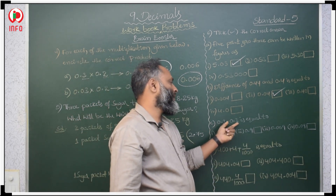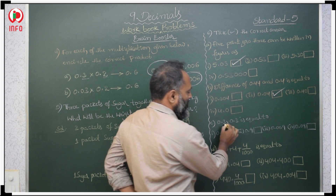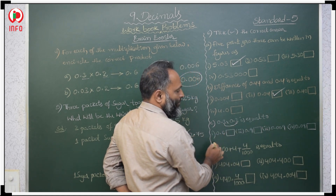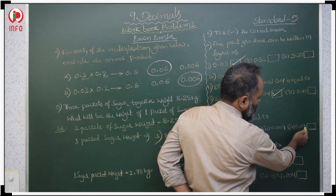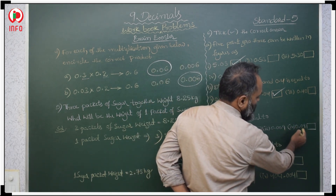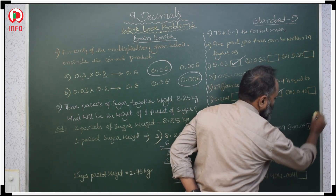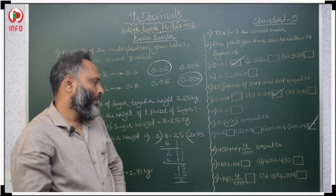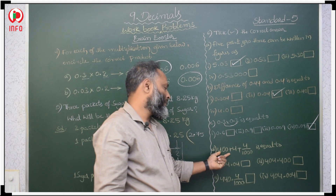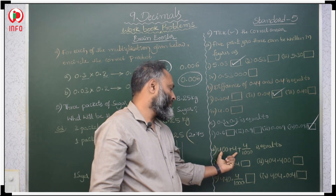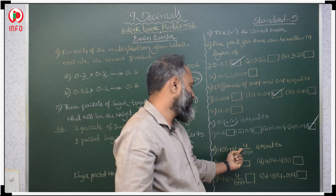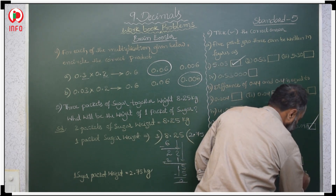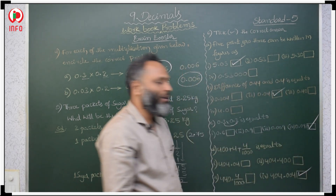0.3 times 0.3: multiply 3 times 3 is 9. After 2 digits we keep a decimal: 0.09. The fourth option is the right answer. Next: 404.004; the fourth option is the right answer here.